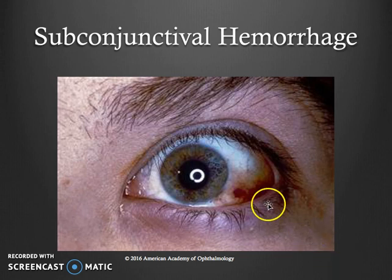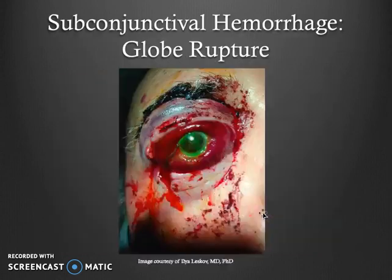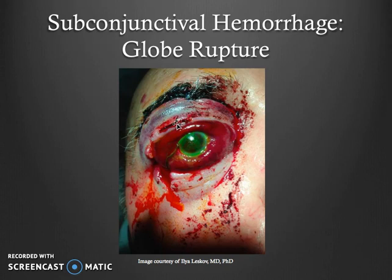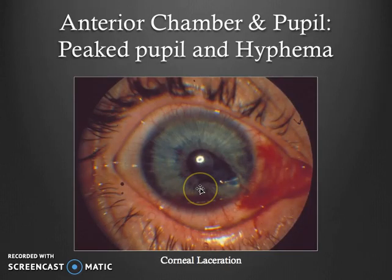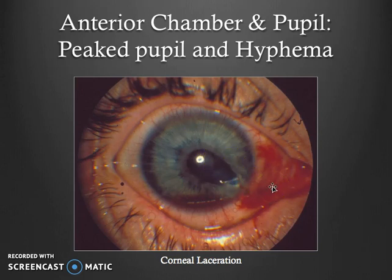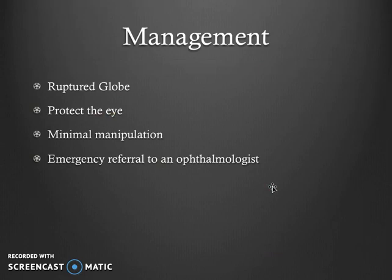Here is a simple conjunctival hemorrhage — a patient may have awoken with this, and it is very localized. However, here is a case of a patient who had trauma, and he has 360 degrees of subconjunctival hemorrhage. In this case, a ruptured globe is very suspicious and needs to be investigated — especially when the hemorrhage is associated with an abnormal pupil in the setting of trauma. The eye should be protected, minimal manipulation should occur, and this is a case for emergency referral to an ophthalmologist.